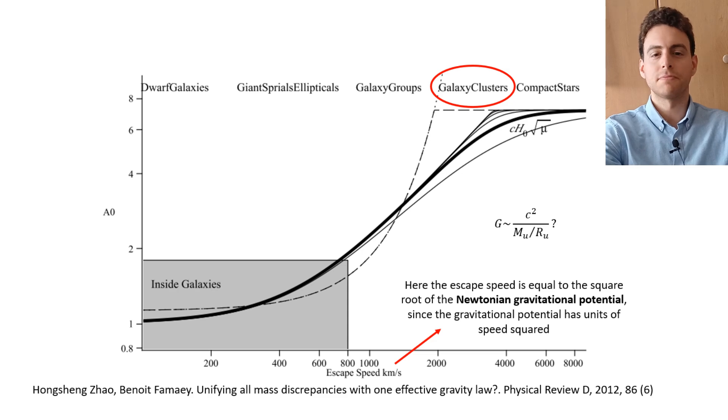So our goal must be modifying MOND in the low acceleration and at the same time the high potential regimes, because clusters, although having higher potentials at the cores than the galaxies themselves, are around the low acceleration regime of MOND. In particular, as pointed out by Bekenstein, we need to boost the acceleration scale constant of MOND in clusters by a factor of two or three.